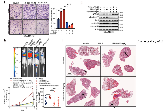Panel I shows H&E-stained lung tissue sections. LBH589-treated mice exhibit an increased number of metastatic nodules. Defactinib treatment reduces these nodules, and the combination therapy achieves the most significant reduction, as shown in the quantification graph. In conclusion, NET9 regulates FAK phosphorylation, a pathway activated by HDAC inhibitors. Defactinib effectively blocks HDAC inhibitor-mediated FAK phosphorylation, reducing cell migration, invasion, and metastasis. The combination of HDAC inhibitors and FAK inhibitors offers a promising strategy for mitigating metastatic burden in breast cancer.